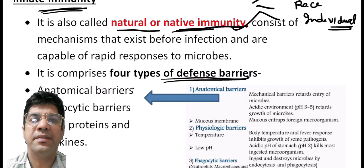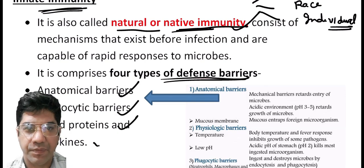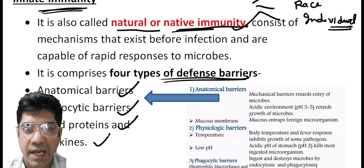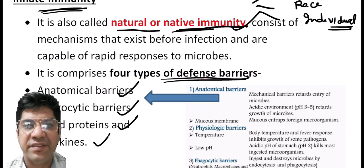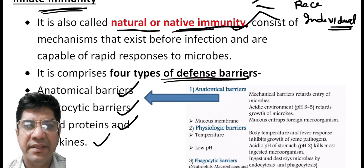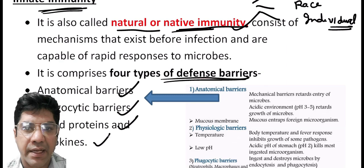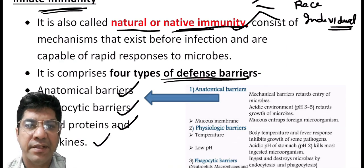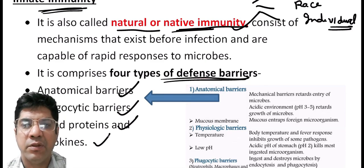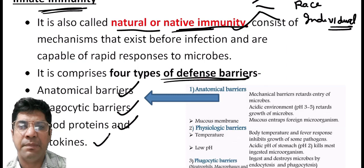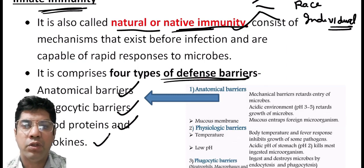Anatomical barriers include the physical structures and characteristics of the body that act as a first line of defense against invading pathogens — for example, the skin, mucous membranes, and various structures in the respiratory, digestive, and urinary tracts. These barriers act as physical blockages that prevent many pathogens from entering the body and causing infection. For example, intact skin acts as a barrier to prevent pathogens from entering through the outermost layer.